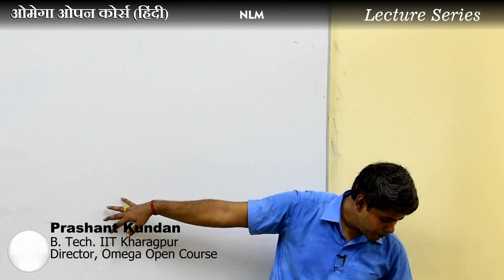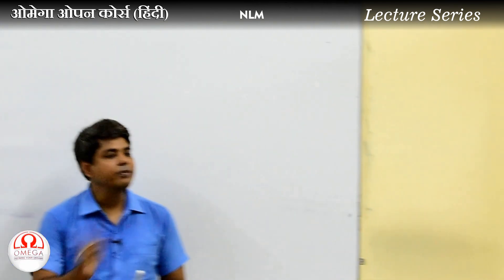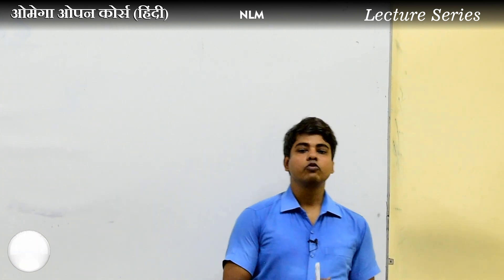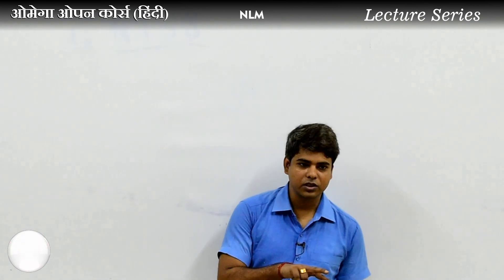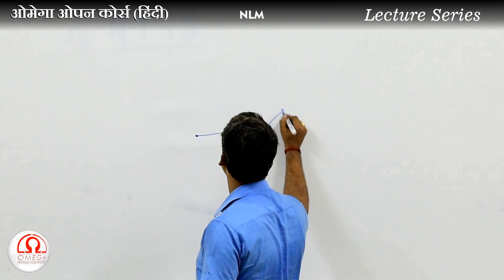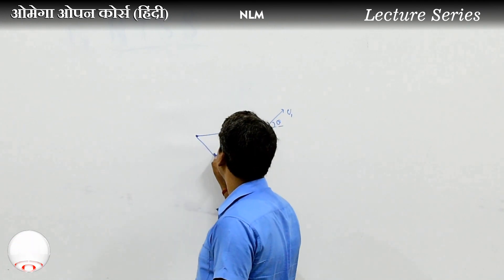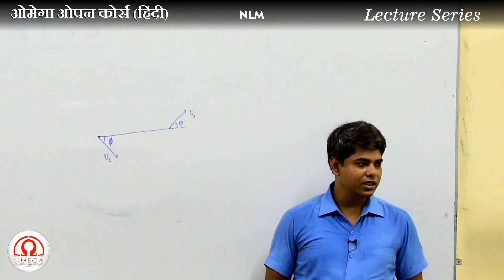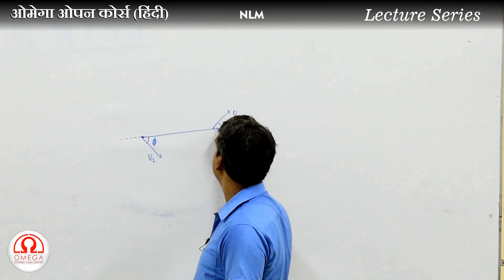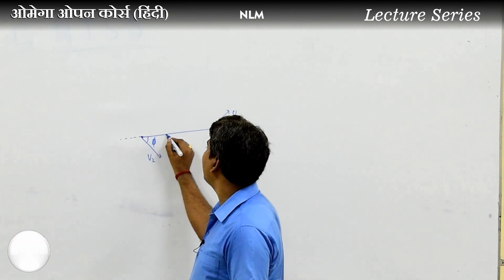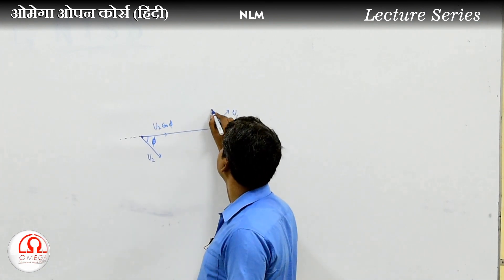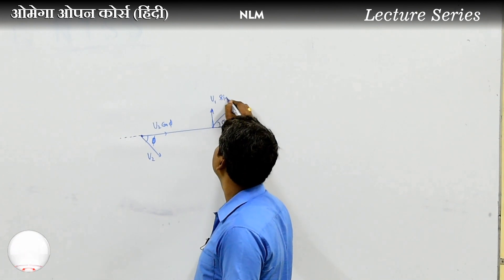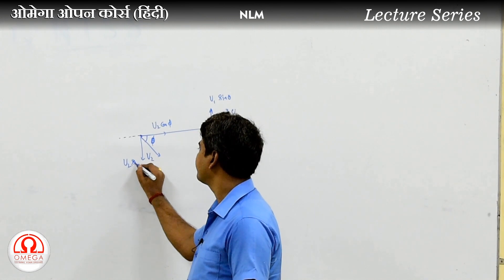As we discussed earlier, when the initial velocity is not zero, there are two types of velocity. The velocity v1 is at angle theta, and the velocity v2 is at angle phi. We can resolve these into two components: one is radial and the other is tangential. The radial component is v1 cos theta and v2 cos phi. The tangential component is v1 sin theta and v2 sin phi.